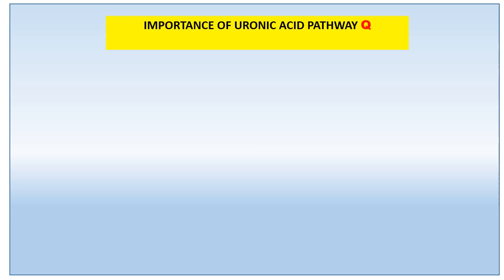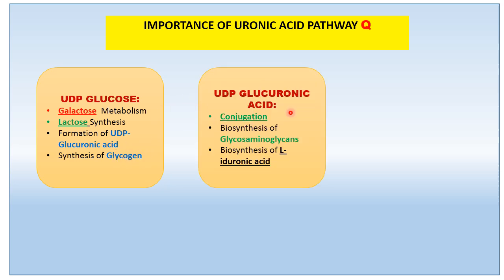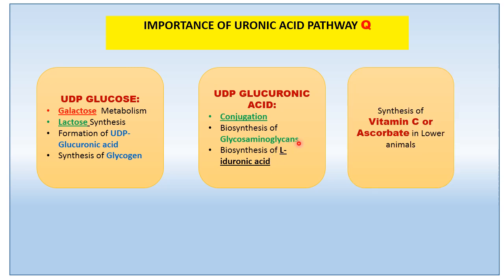The significance of the uronic acid pathway includes: UDP glucose, which is used in galactose metabolism, lactose synthesis, formation of glucuronic acid, and glycogenesis. UDP glucuronic acid is required for conjugation and detoxification of bilirubin and steroid hormones, biosynthesis of glycosaminoglycans, and production of L-iduronic acid. Additionally, vitamin C or ascorbate can be synthesized via L-gulonolactone oxidase as an alternative fate of L-gulonate.